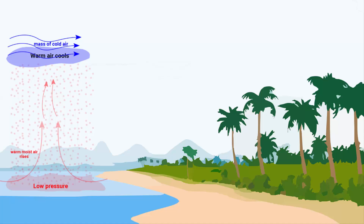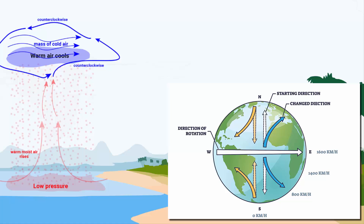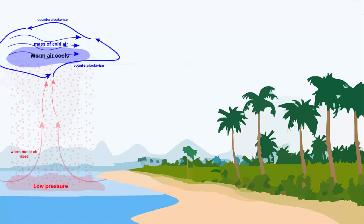The Coriolis effect, caused by the Earth's rotation, deflects the winds blowing towards the low pressure area, causing them to rotate counter-clockwise in the northern hemisphere and clockwise in the southern hemisphere. The rotating winds further intensify the storm. There is a strong vertical movement of air that carries warm and moist air upward, and that creates a type of cloud called a vortex cloud.